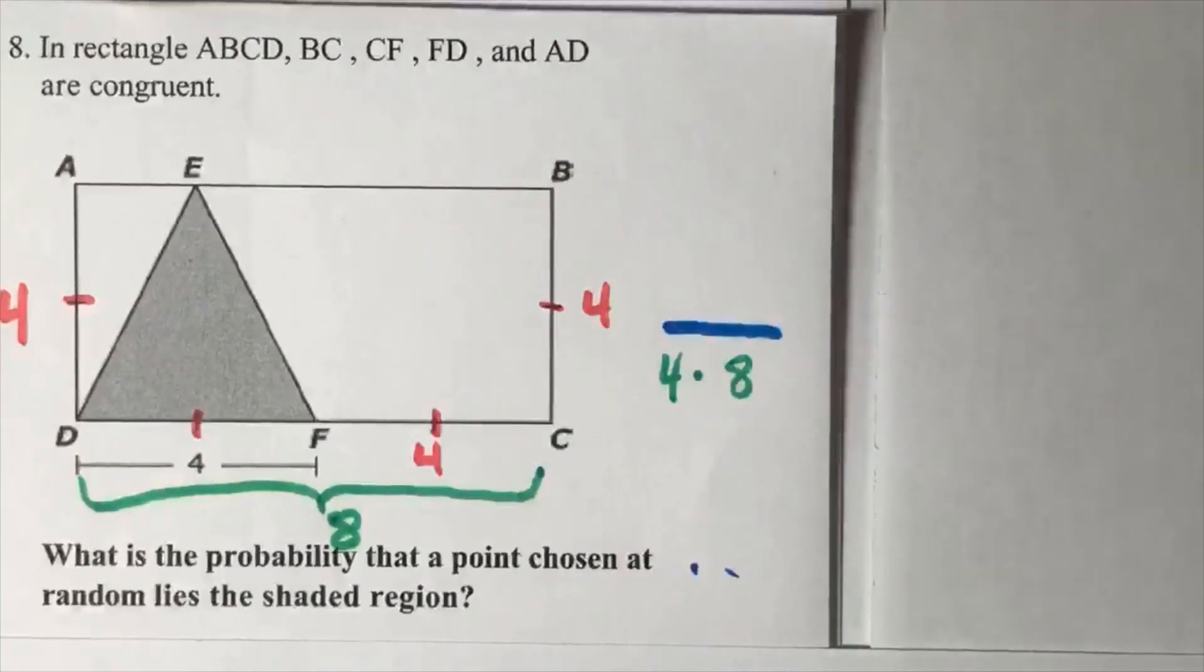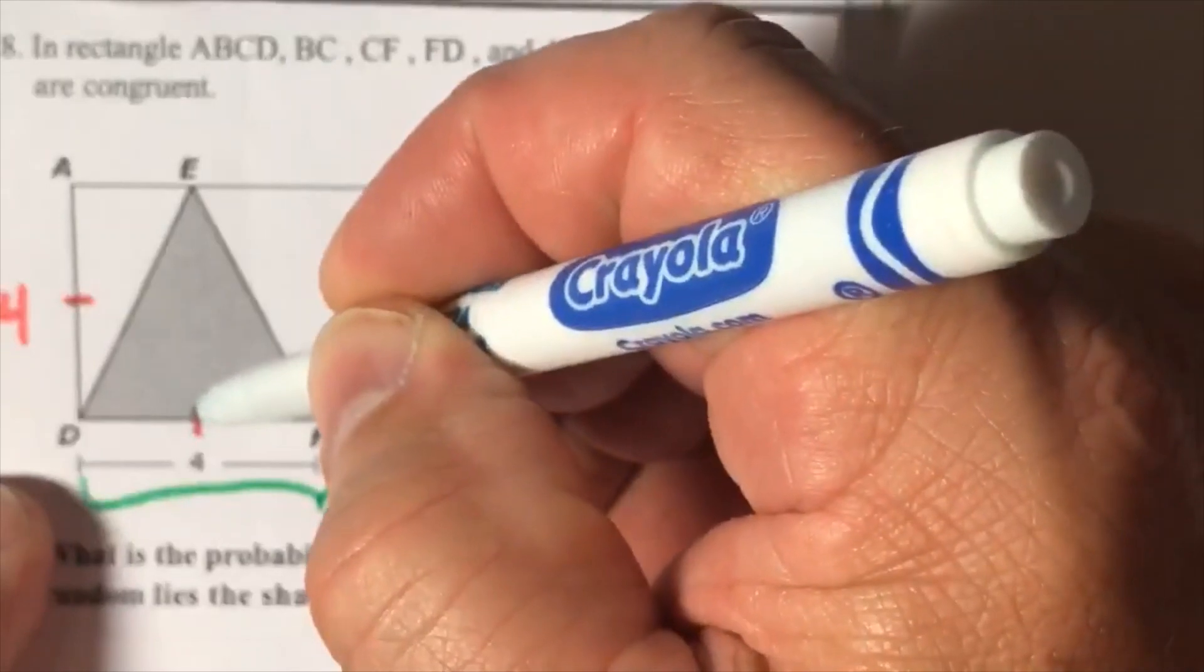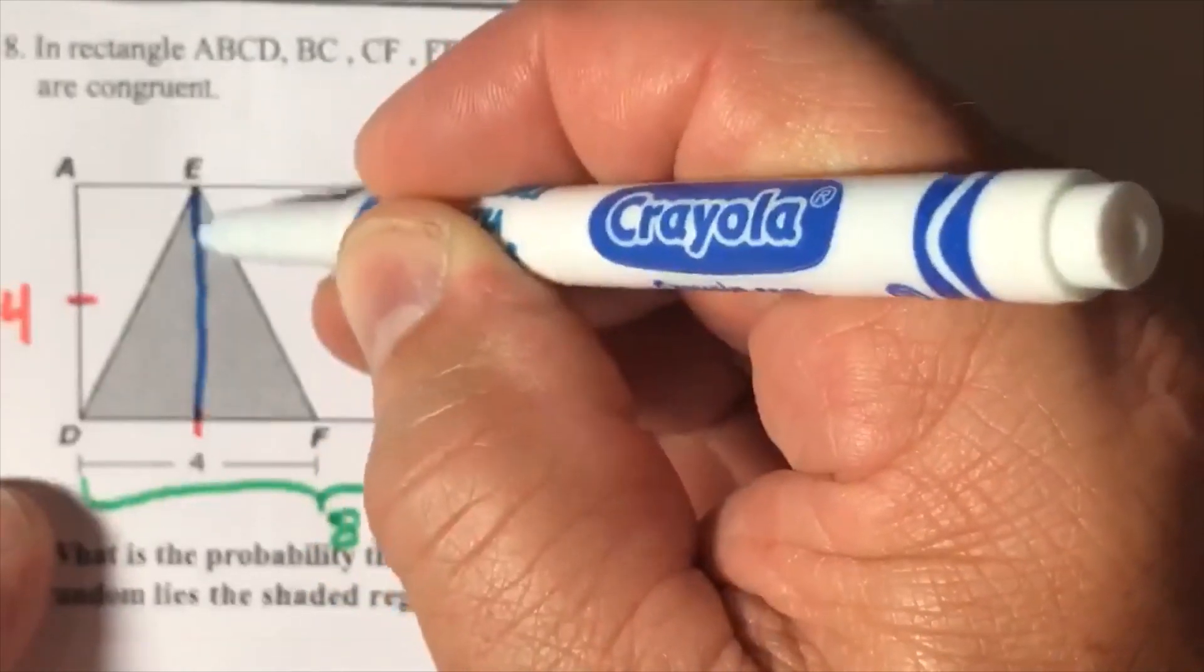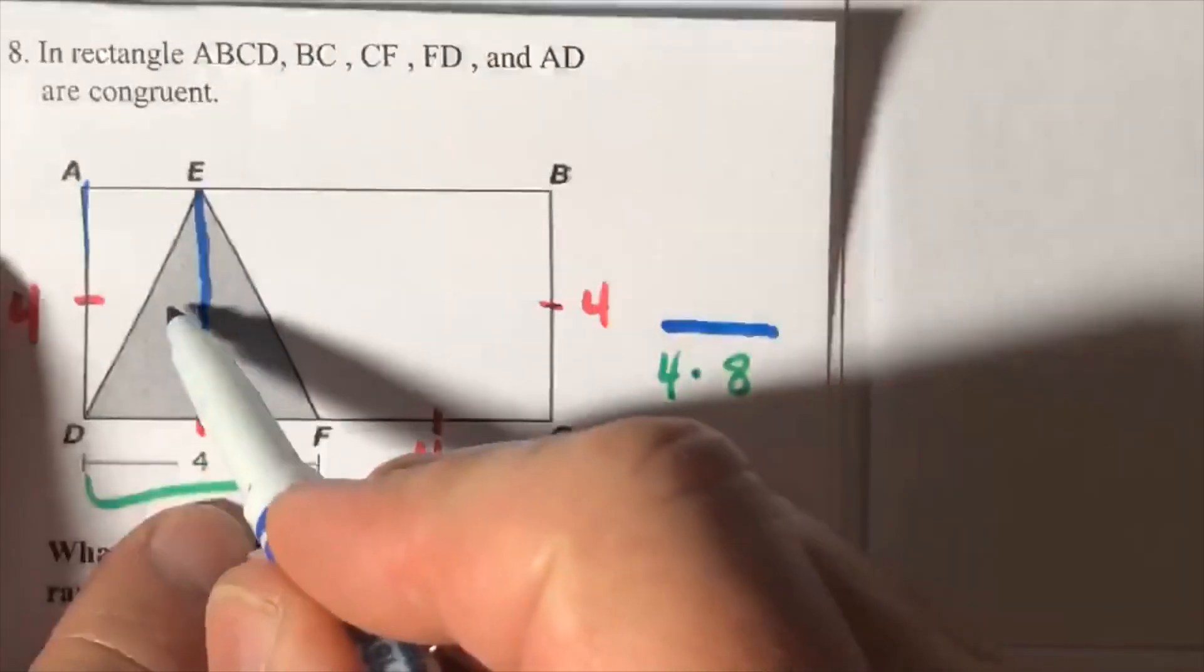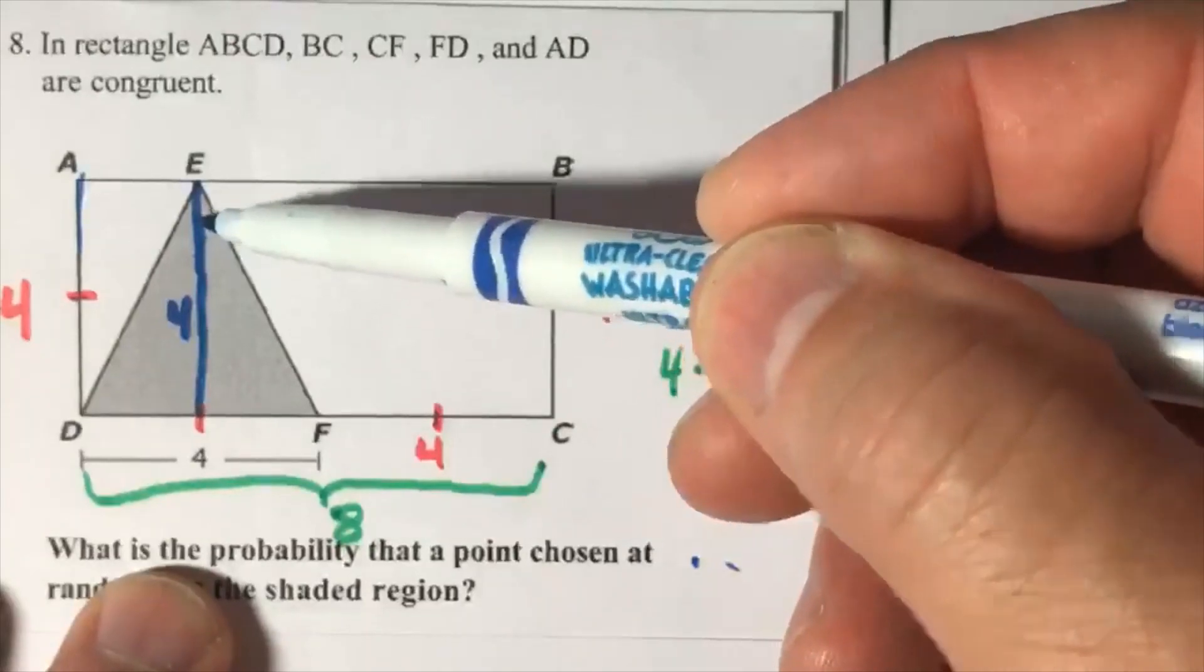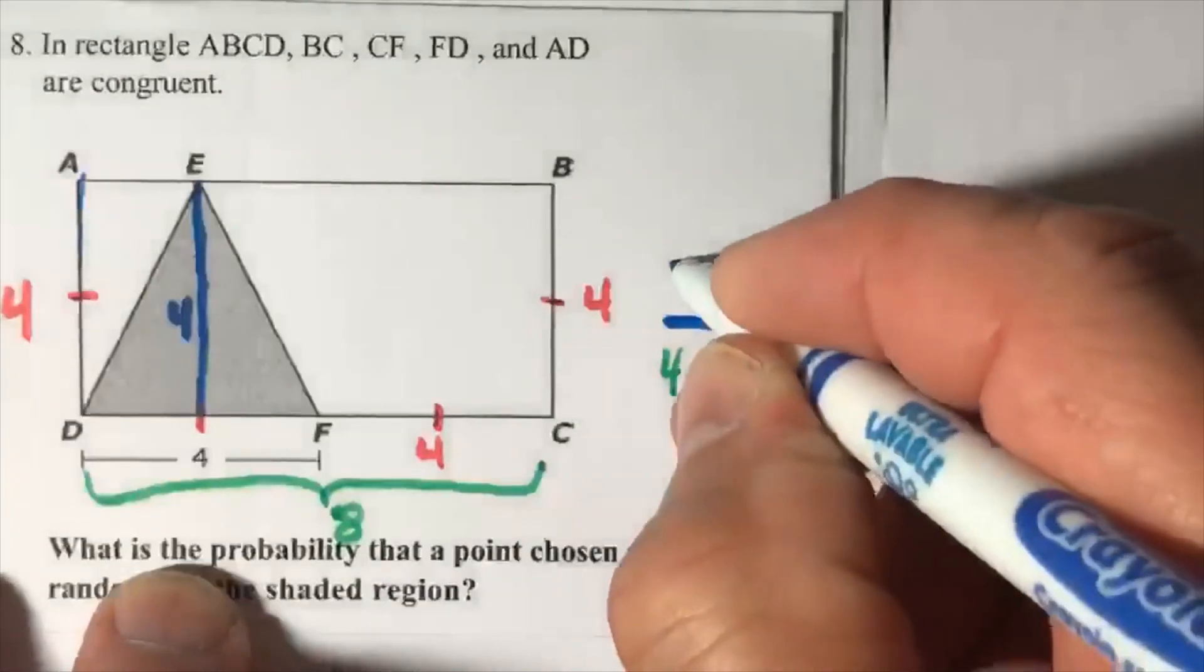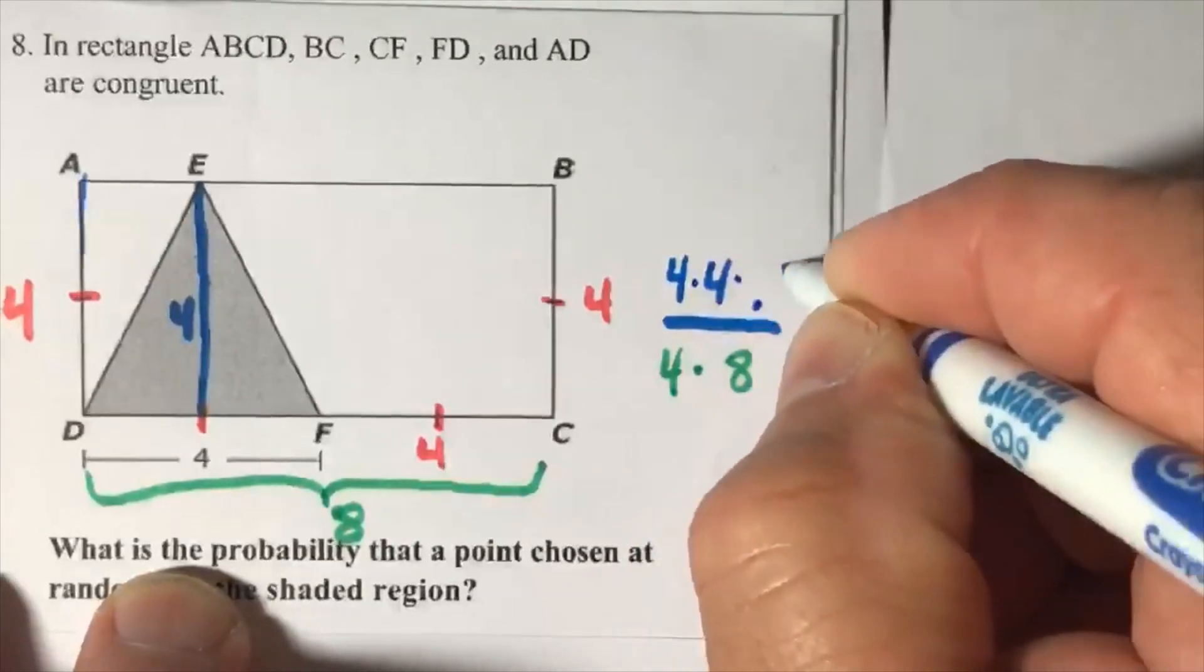Do you remember the formula for a triangle? Base times height divided by two. Here's my height - from here to here in blue is four. That entire length comes from the side of the rectangle, so that's four. Base times height divided by two, so I would put four times four times 0.5.